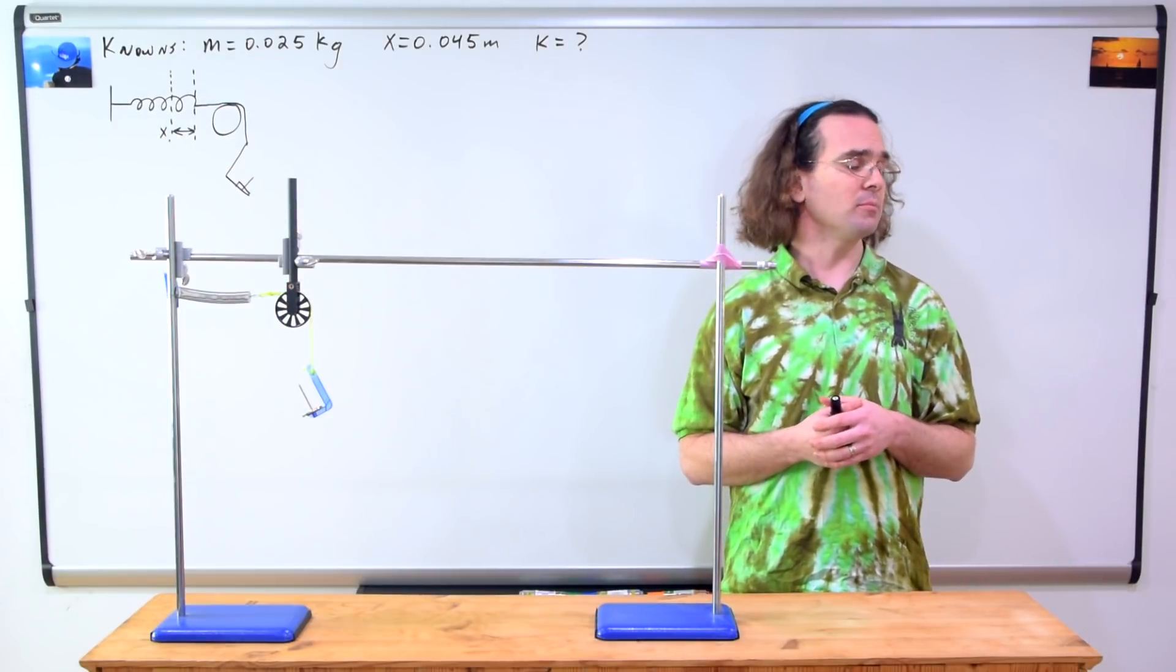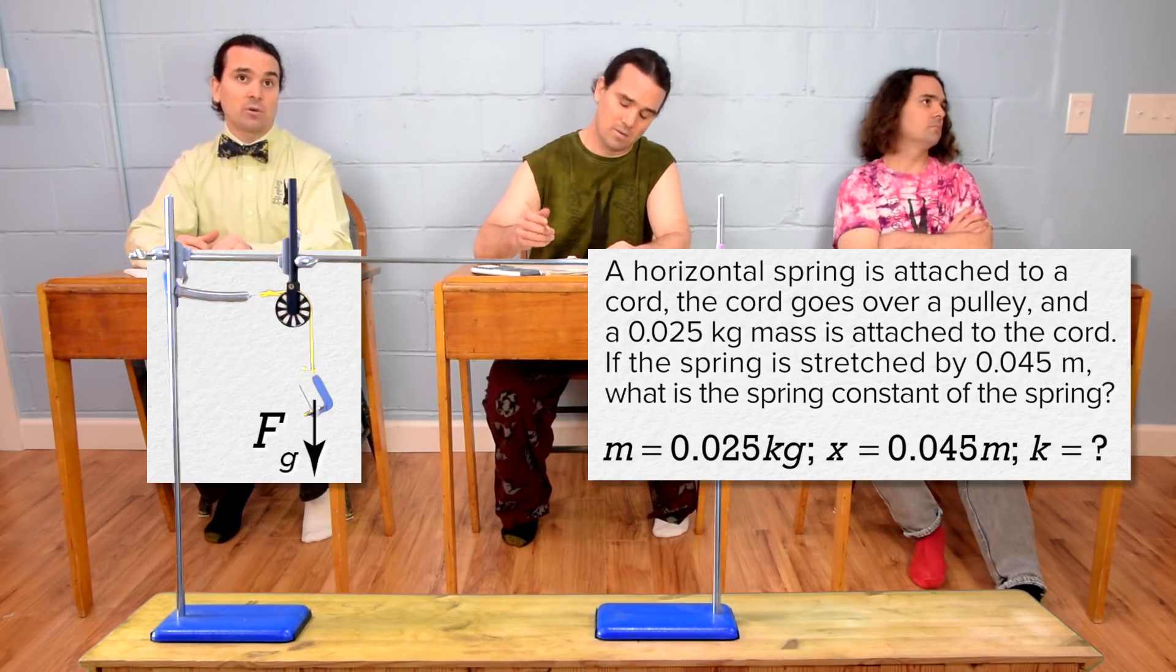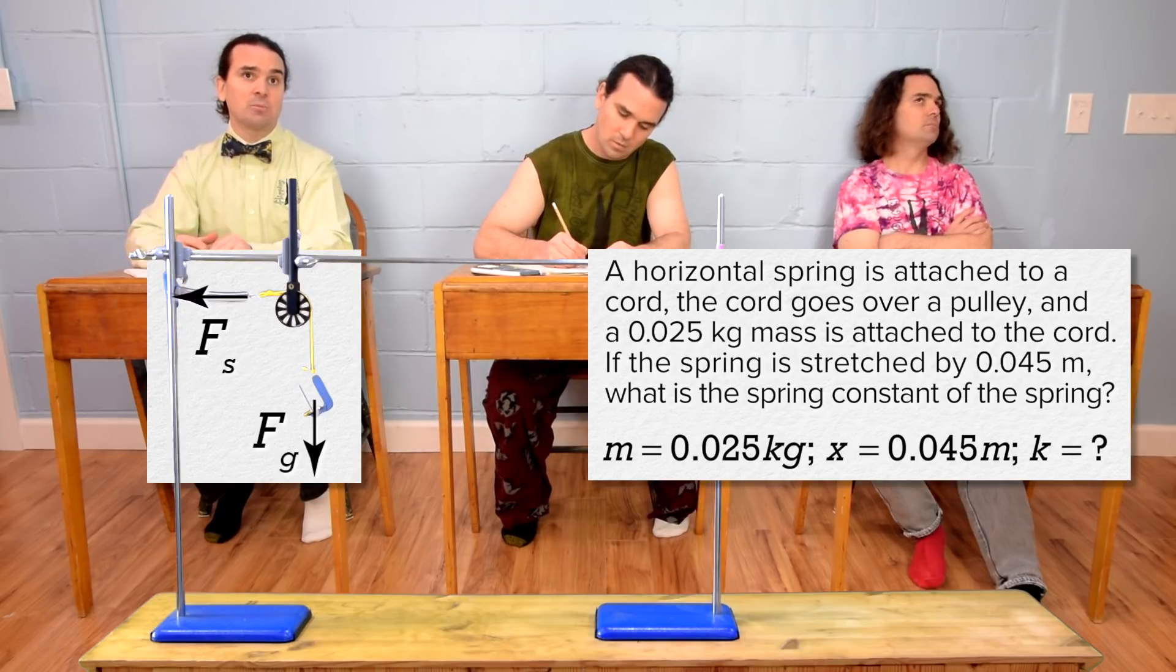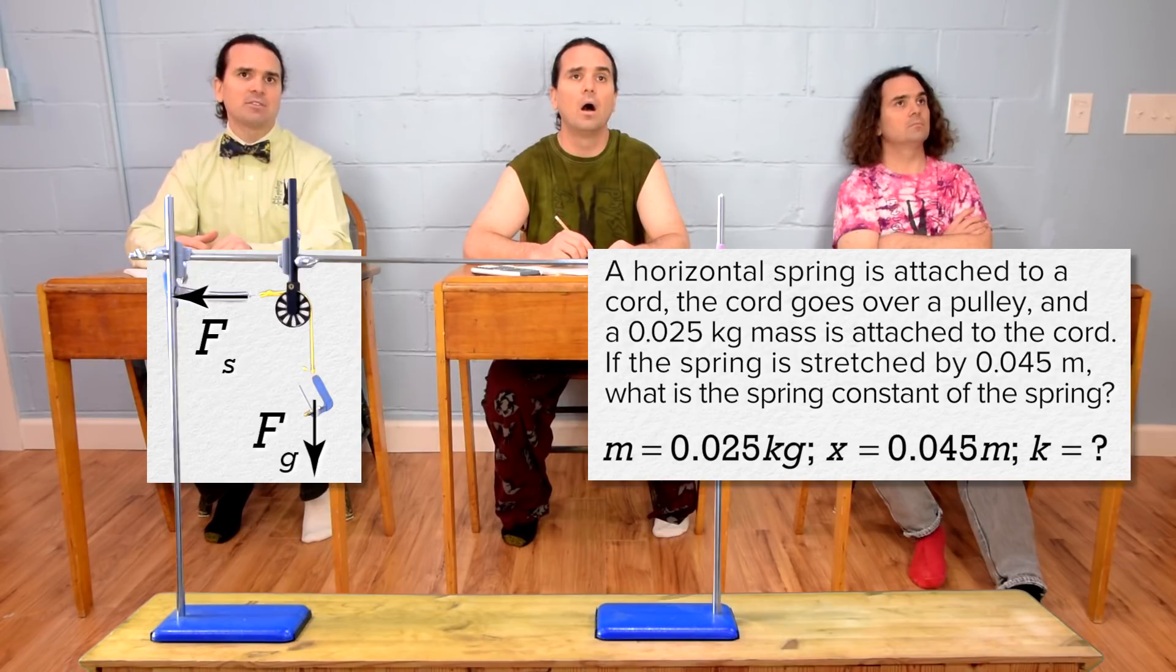Billy, please solve the problem. Okay, let's start with the free body diagram of the forces acting on the system. The force of gravity on the hanging mass acts downward. The force of the spring acts to the left because the spring is displaced to the right and the force of the spring is opposite the displacement of the spring.